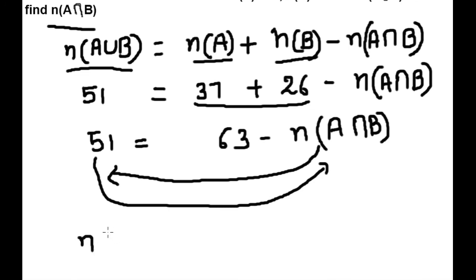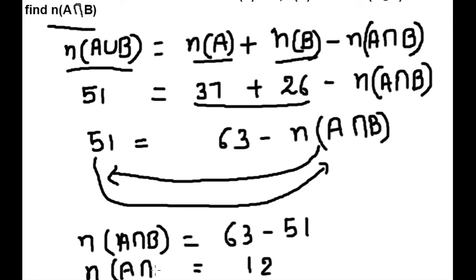Now we can say n(A intersection B) is equal to 63 minus 51. So this is 12. Therefore, n(A intersection B) equals 12.